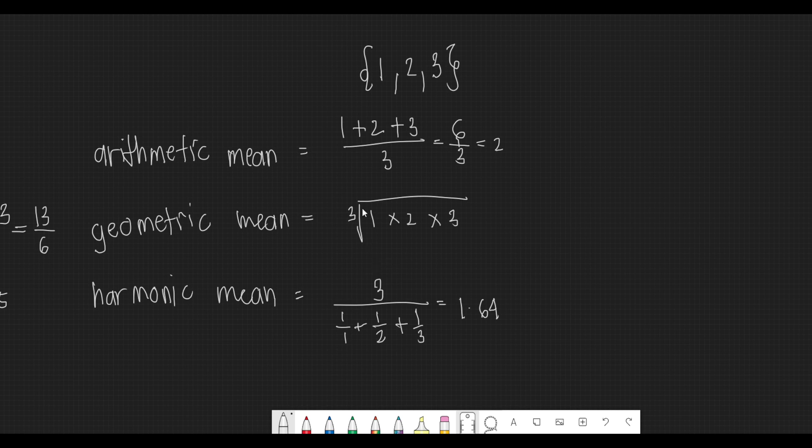And getting the cube root of that would give us a result of 1.82. So these are the three types of mean.